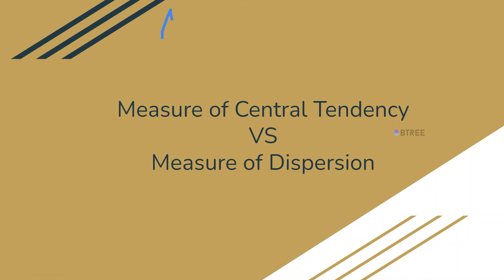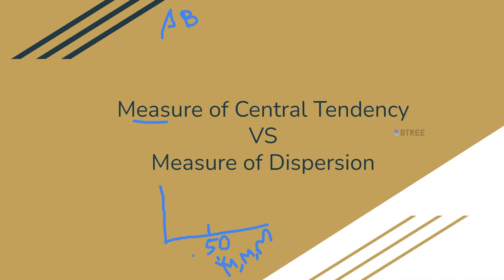We are taking class A and class B and going to analyze their marks. What do we have to do with the past marks? We look at the center of the data set. The measure of central tendency tells us about the center — using mean, median, and mode. This is the measure of central tendency, representing around 48 marks.